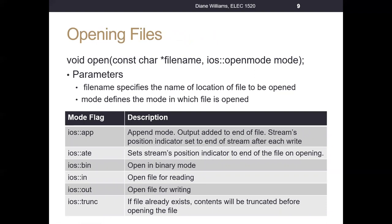When we open files, we call a function called open — not hard to remember. That function requires an argument: the file name. We also need to tell it what mode — do we want to open it for reading, writing, or appending? There are mode flags available. The APP (append) mode moves the stream's position indicator to the end of the file, and every time you write to the file in that mode you write to the end.